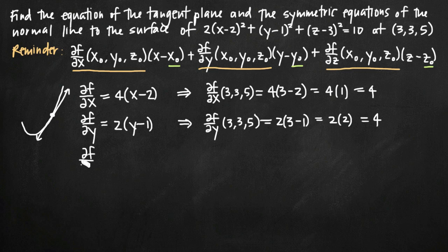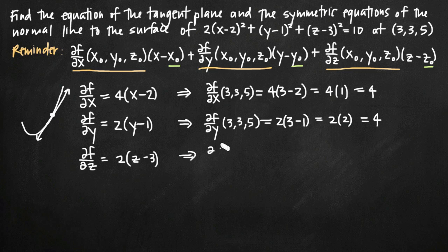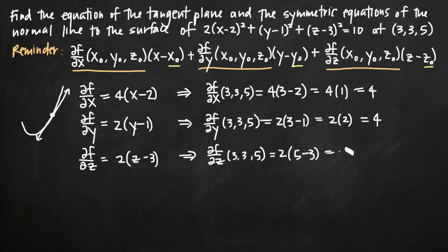The partial derivative with respect to z works similarly — the derivatives of the other terms are 0. For (z-3)², power rule with chain rule gives 2(z-3). Evaluating at (3, 3, 5), z = 5: we get 2(5-3) = 2(2) = 4. So all three partial derivatives evaluated at the given point equal 4.